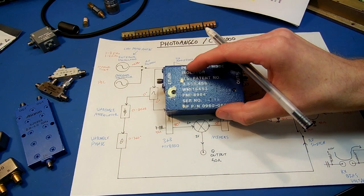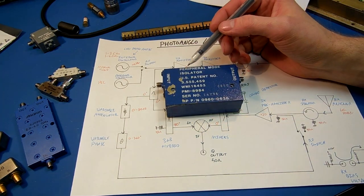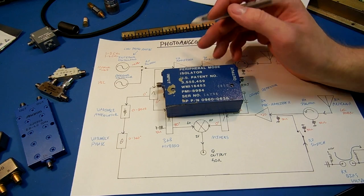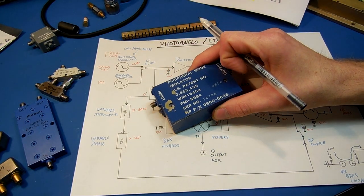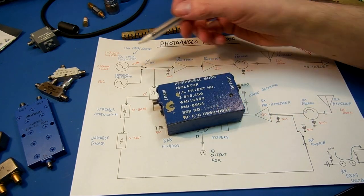This is a wide band isolator, called the peripheral mode isolator. It operates between 2 and 7 gigahertz. It's designed for low power signals only, like from the output of the YIG oscillator.